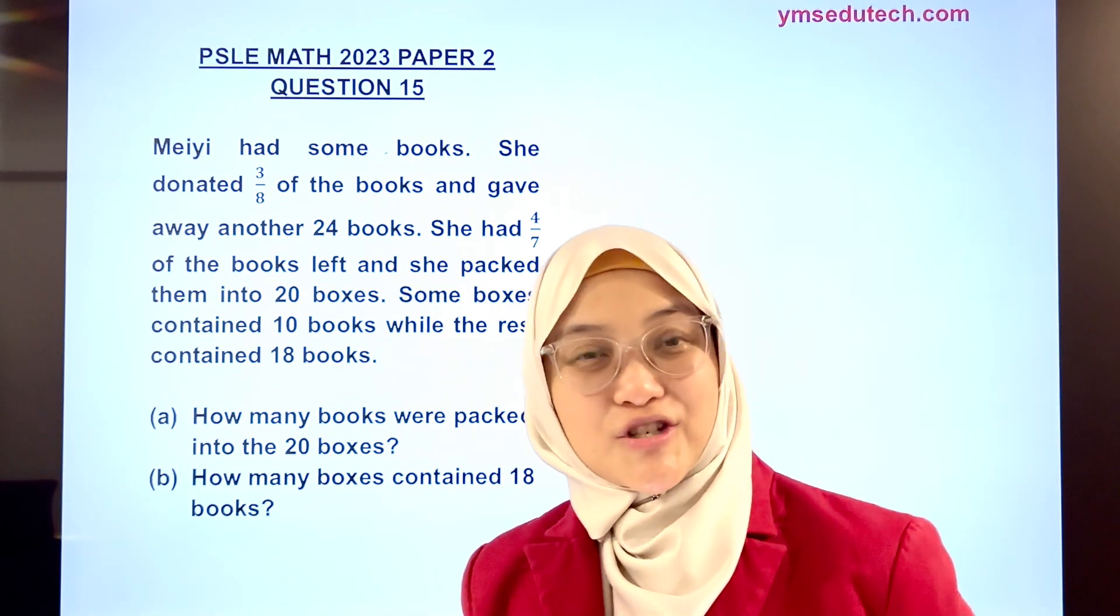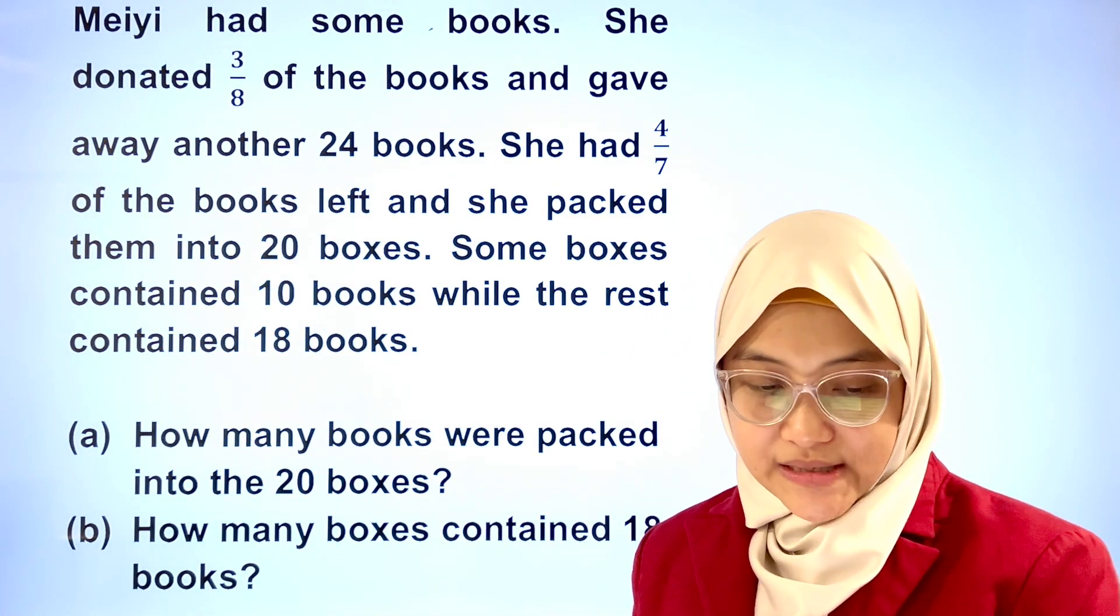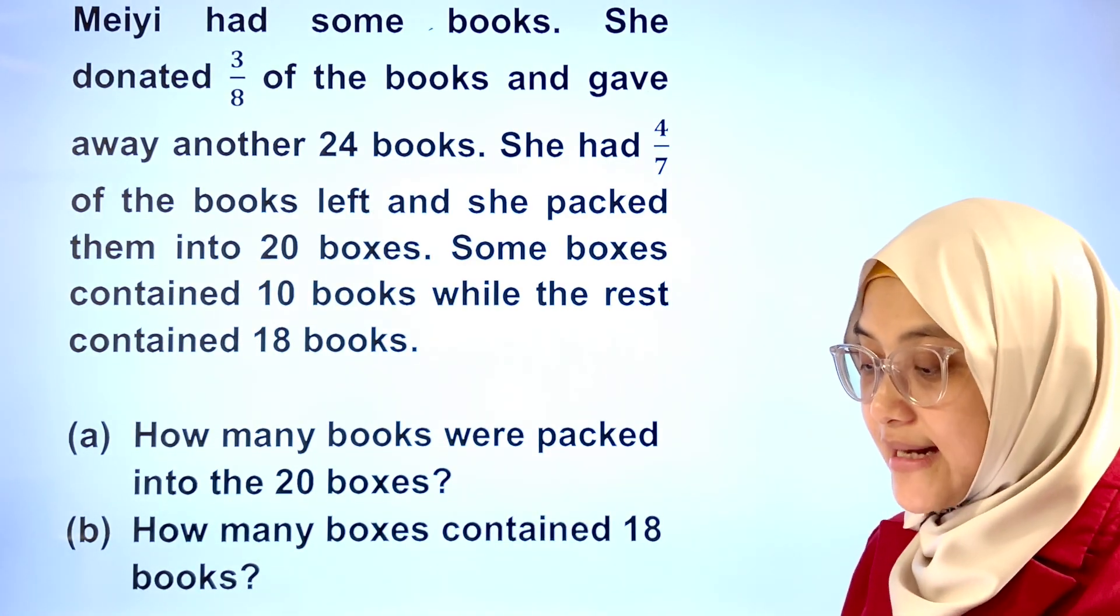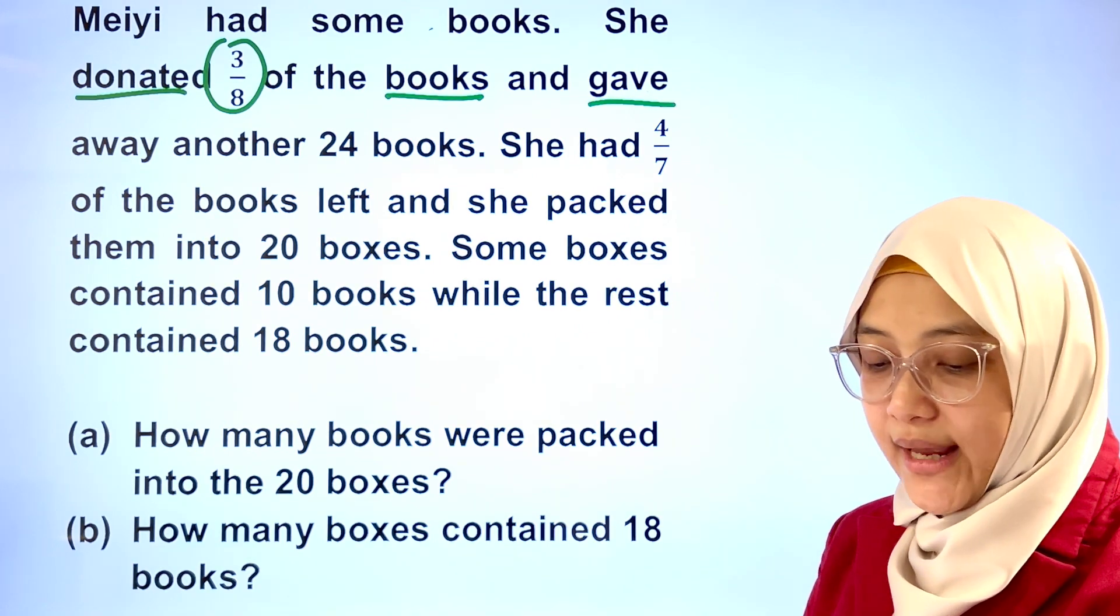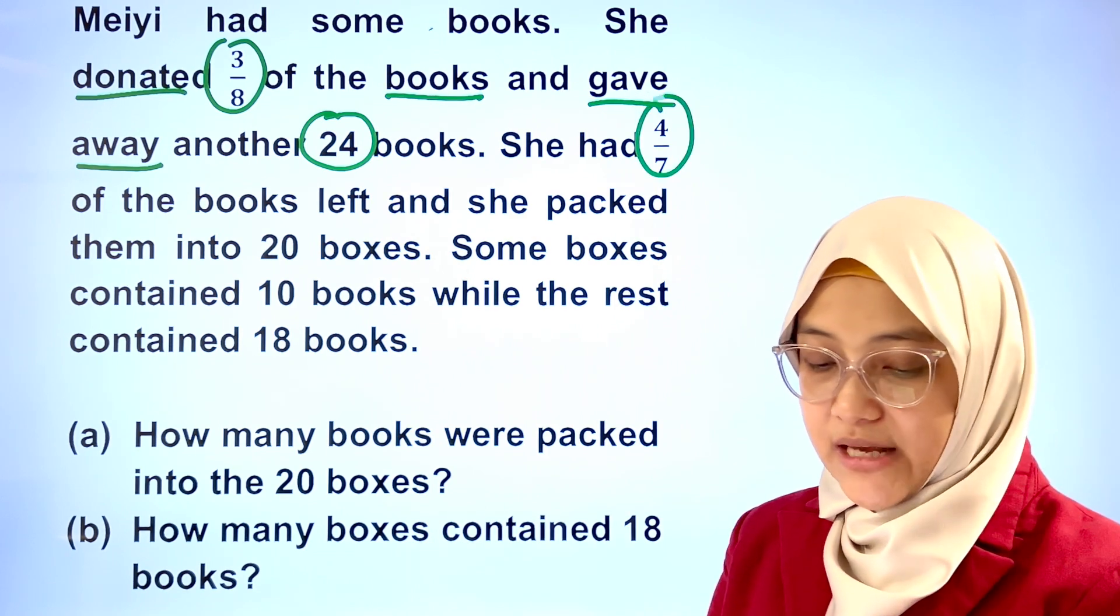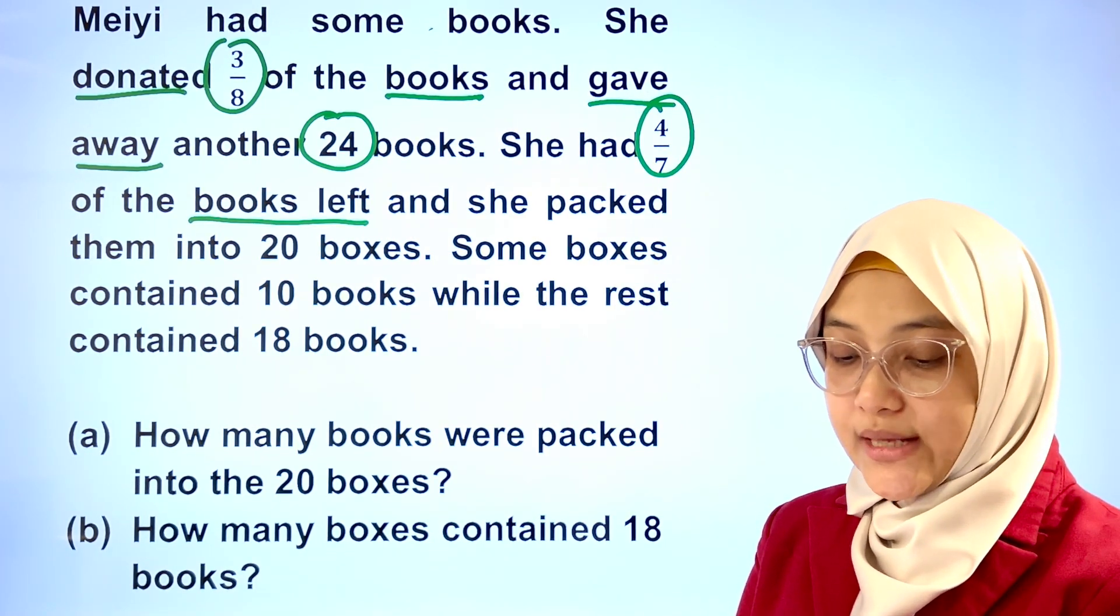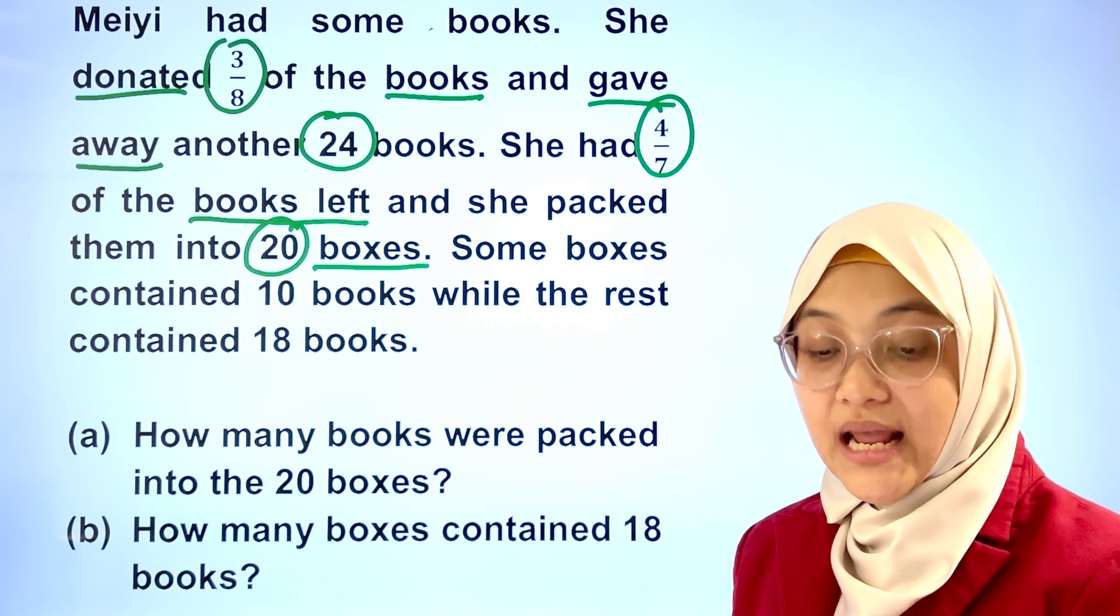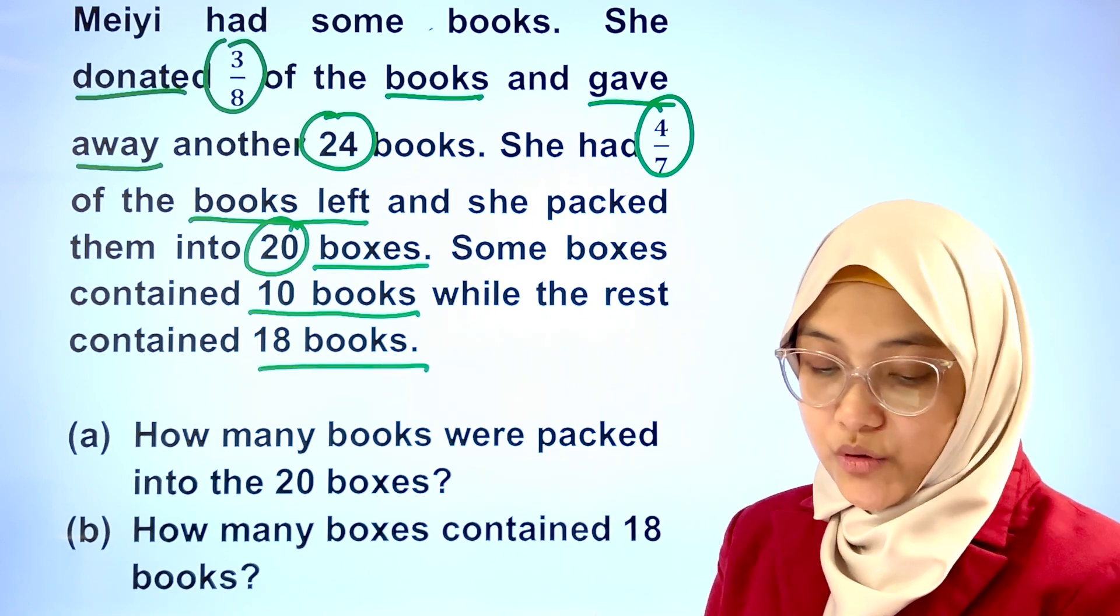Let's read the question together. Meiyi had some books. She donated 3/8 of the books and gave away another 24 books. She had 4/7 of the books left and she packed them into 20 boxes. Some boxes contained 10 books, while the rest contained 18 books.